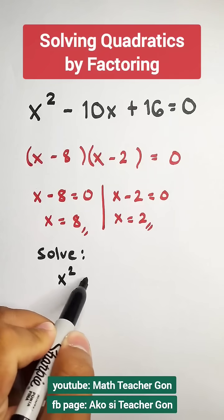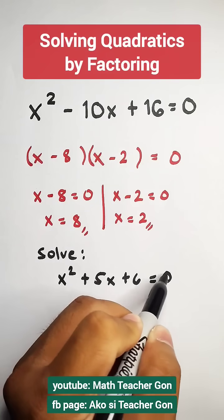Solve for x squared plus 5x plus 6 is equal to 0. Follow for more.